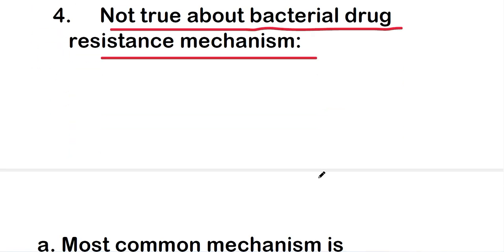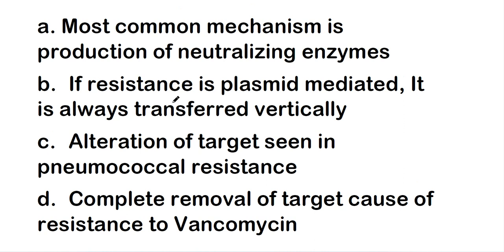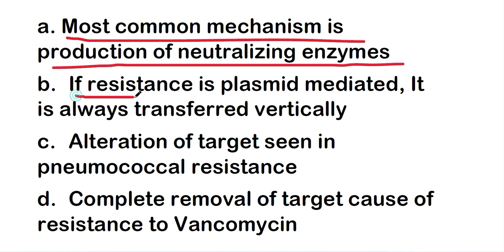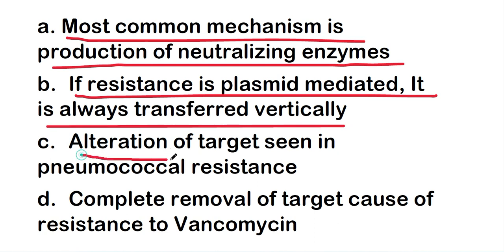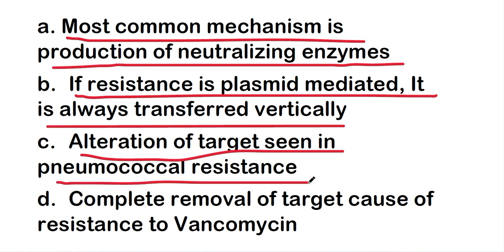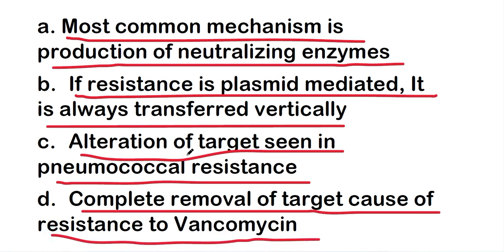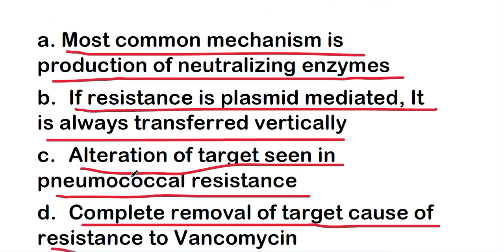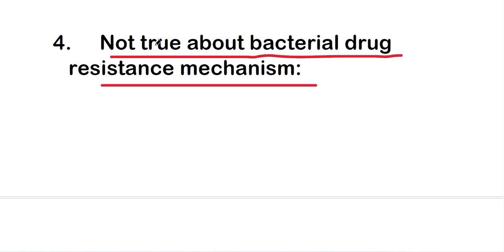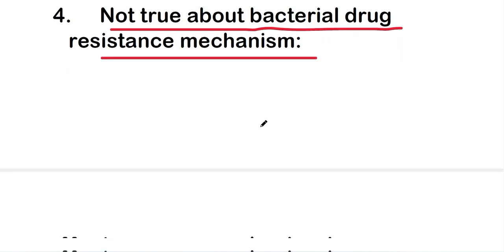Next question: which is NOT true about bacterial drug resistance mechanism? Options: most common mechanism is production of neutralizing enzymes; if resistance is plasmid mediated it is always transferred vertically; alteration of target seen in pneumococcal resistance; complete removal of target as cause of resistance to vancomycin. The right answer is option B — if resistance is plasmid mediated it is always transferred vertically. This statement is not true.